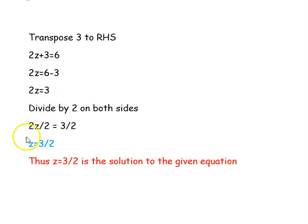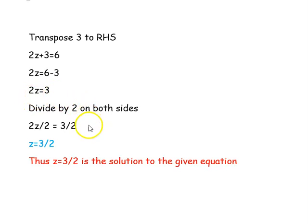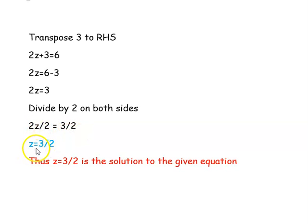Now we want the variable z alone. We are going to divide by 2 on both sides of the equation. So, 2z by 2 equal to 3 divided by 2. The 2s cancel, and z equal to 3 by 2 is the solution to the given equation.